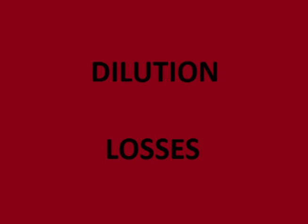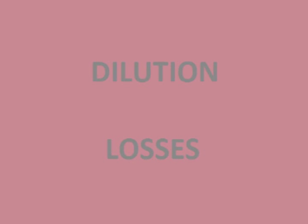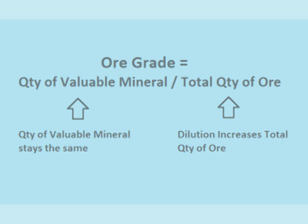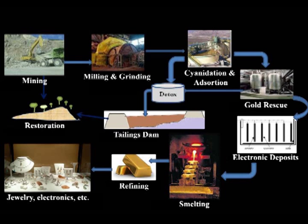When converting mineral resources to reserves, the competent person includes dilution and losses into the estimate. Dilution occurs because some of the non-valuable dirt and rock surrounding the reserves must also be mined out, which increases the total tonnage of material being pulled out of the ground. This dilutes the ratio of valuable materials versus total material, which lowers the stated ore grade. Losses occur during mining and processing. Mining is not a perfect process — some of the valuable mineral is left behind and some is lost during processing. The reported quantity of minerals in reserves has an allowance for losses already subtracted off of the total.